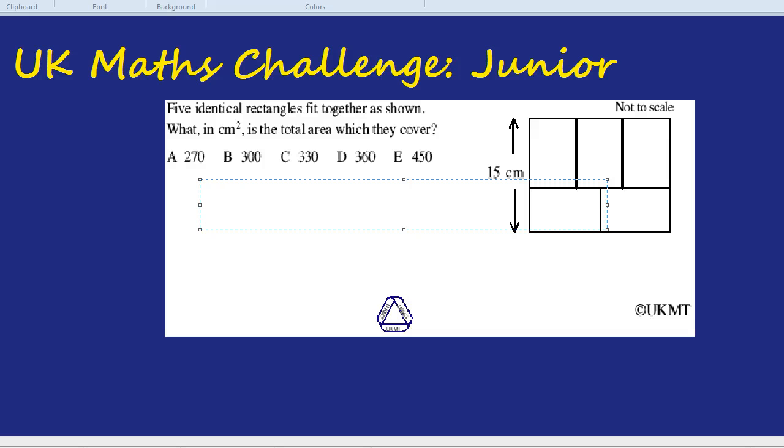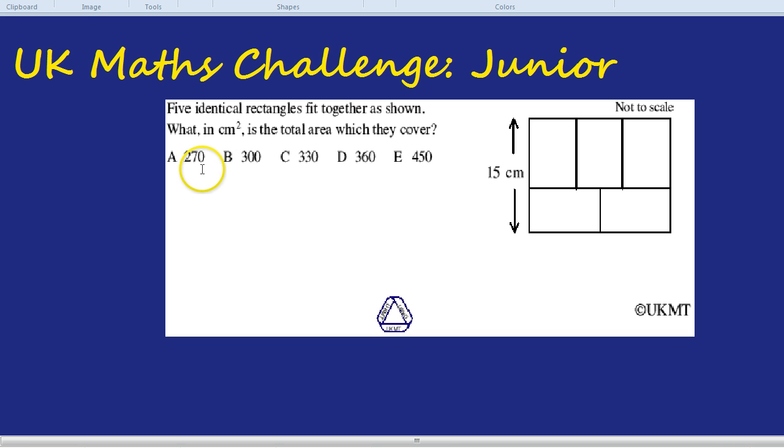Here's another question from the UK Maths Challenge Junior Challenge, and with permission from the UKMT, I'm going to go through it now. You might want to try it first and see what you get, and then check it against my answer. Five identical rectangles fit together as shown. What in centimeters squared is the total area which they cover?